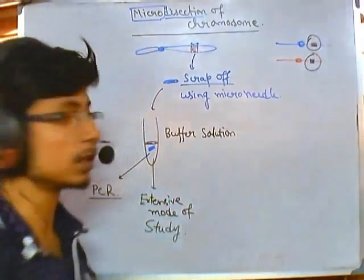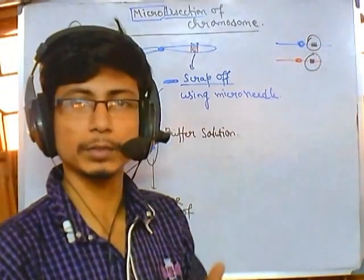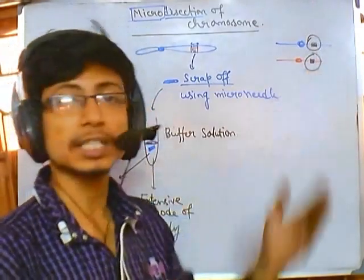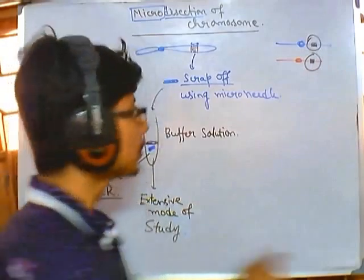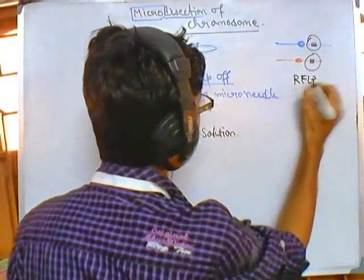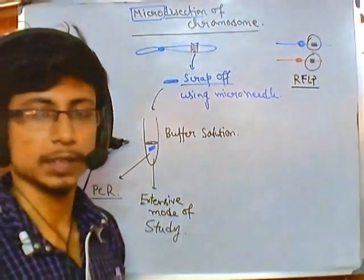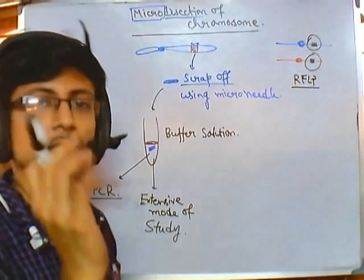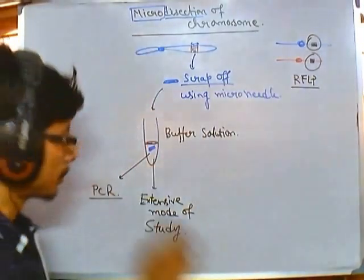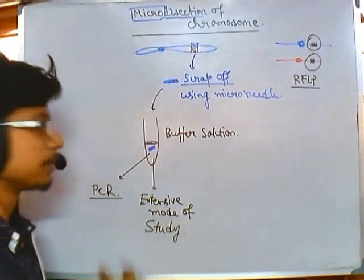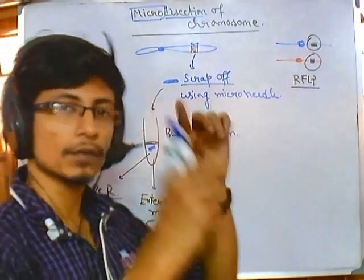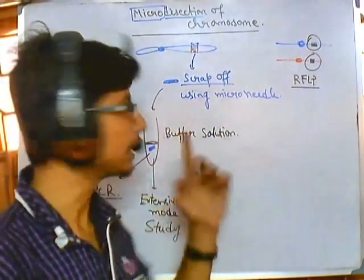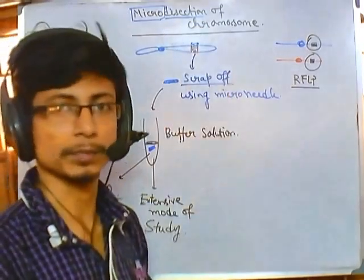Micro dissection also helps us create genetic maps and tell the difference between two individuals' chromosomes using restriction enzymes — a technique called restriction fragment length polymorphism or RFLP. To prepare the segment of DNA for RFLP analysis, diseased chromosome analysis, or PCR amplification, we must first take the scraping of a chromosomal segment from the larger chromosome. That is what micro dissection of chromosome is all about.